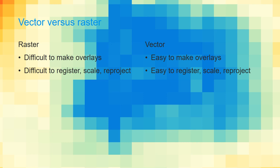With rasters, if we want to reproject, register, or scale, it needs quite some calculations, while with vectors, we only need to do that for the nodes and remake the connections of the geometry, so that's much faster and easier.